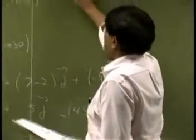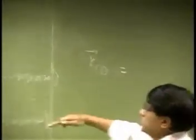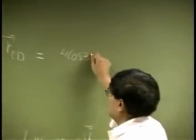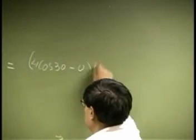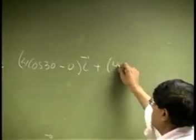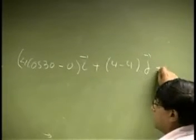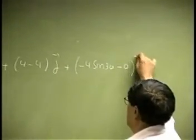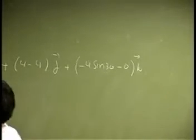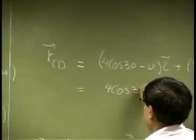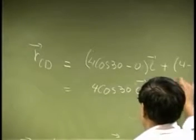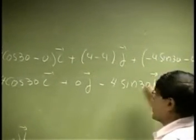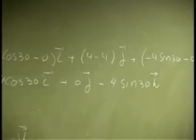Then we need RCD. This is going to be this minus this. So you have 4 cosine 30 minus 0, I. Then you have 4 minus 4, that should be 0 J. Then we have negative 4 sine 30 minus 0, K. So that becomes 4 cosine 30 I, plus 0 J, minus 4 sine 30 K. That's your second vector.